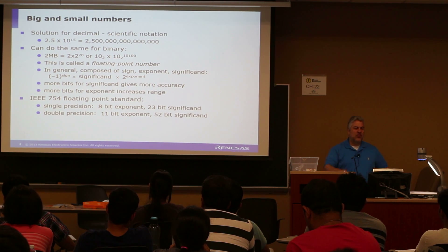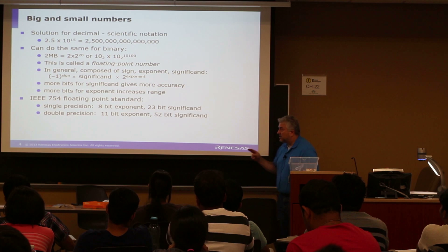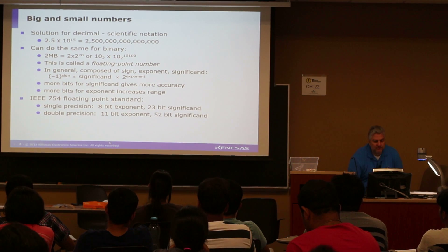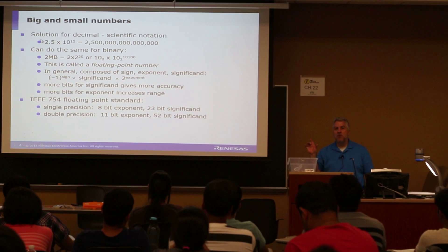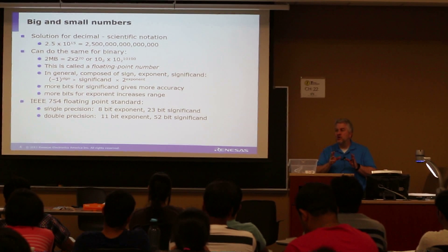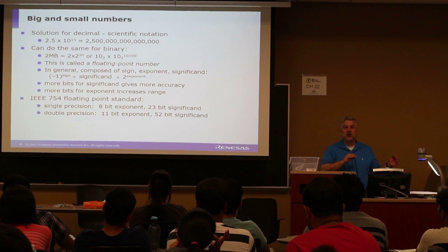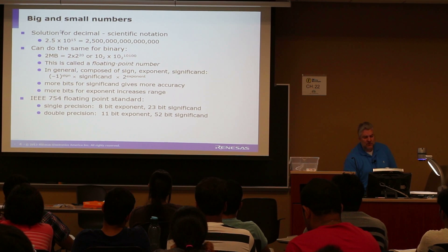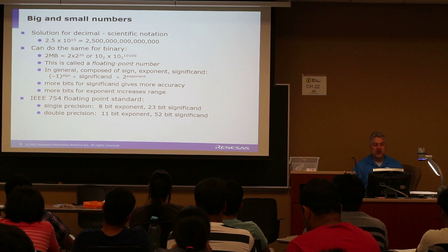In decimal, think about a very large number like 2.5 times 10 to the 15th. The nice aspect of that is the 2.5 part is relatively small — you only have a few digits to worry about. And there are a lot of zeros, which just means it's a very large number. So you actually have two different parts of this number: the mantissa part and the exponent part. We're going to do the same for a binary number.